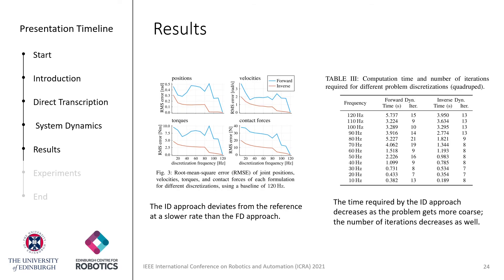In this slide, we present results showing that inverse dynamics formulations are more robust to coarse trajectory discretization. The plot on the left shows the root-mean-square error of the joint positions, velocities, torques, and contact forces for a jumping quadruped robot. As the discretization frequency decreases, the error from both approaches increases, as expected. However, the rate at which the errors increase is significantly different — trajectories optimized using inverse dynamics remain closer to the baseline trajectory. Moreover, the table on the right shows that the total time and number of iterations required decreases monotonically for inverse dynamics, whereas forward dynamics does not reflect an obvious pattern.